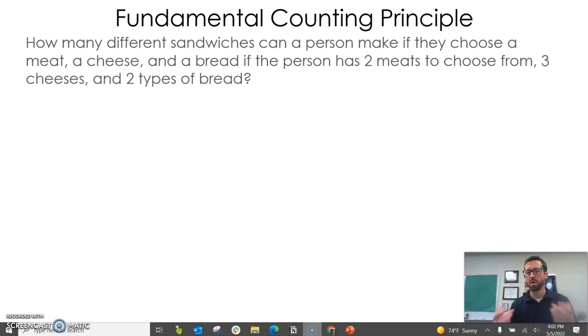For the fundamental counting principle, here's our problem situation that's going to illustrate the idea. How many different sandwiches can a person make if they choose a meat, a cheese, and a bread, if the person has two meats to choose from, three cheeses, and two types of bread?